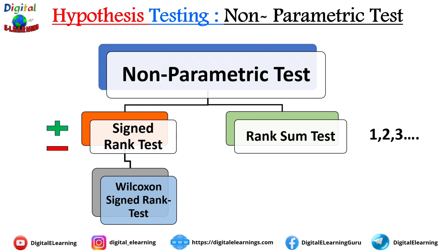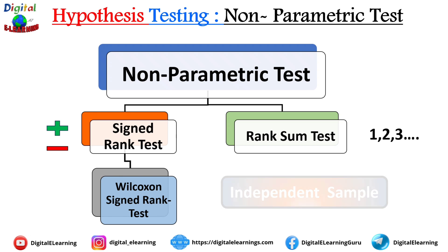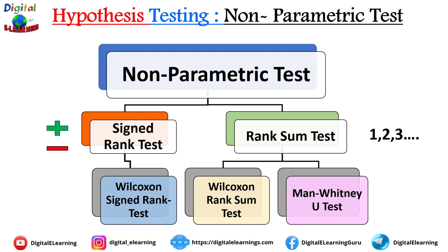On the other hand, we have rank sum, which is ranking 1, 2, 3 and so on. This is used for independent samples when you are comparing two different groups instead of repeated measurements on the same group. The two most popular tests under rank sum are the Wilcoxon's rank sum test and the Mann-Whitney U test. If it is signed, we are looking at positive and negative differences between pairs; if it is rank sum, we are comparing rank data across groups.